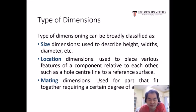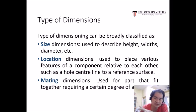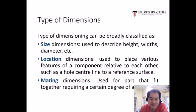There are different types of dimensions. Size dimensions are used to describe the height, width, and diameter. Location dimensions are used to place various features of a component relative to each other, such as a hole center line to a reference surface. Mating dimensions are used for parts that fit together and require a certain degree of accuracy.